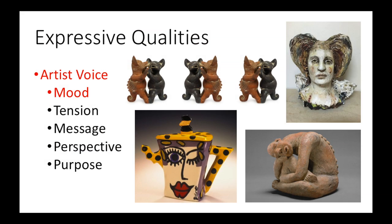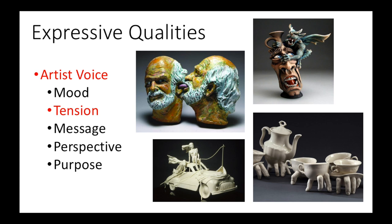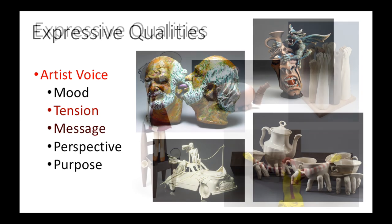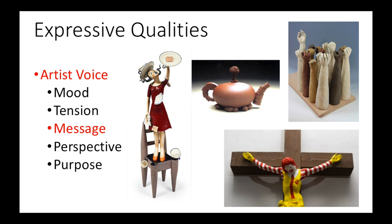Now let's consider expressive qualities. These qualities are used by the artist to give a voice to their work. Examples include mood, tension, message, perspective, and purpose. An artist can share their mood with the viewer or attempt to solicit that emotion from us. Tension is edgy and often uncomfortable — it can be provided by a method of construction, the balance of a piece, or other aesthetic qualities, and can sometimes be creepy, scary, or disturbing. Many artists use their medium to send a message, whether very subtly or quite blatantly, as with Patty Warashina's China Crisis or Richard Notkin's Nuclear Teapot.